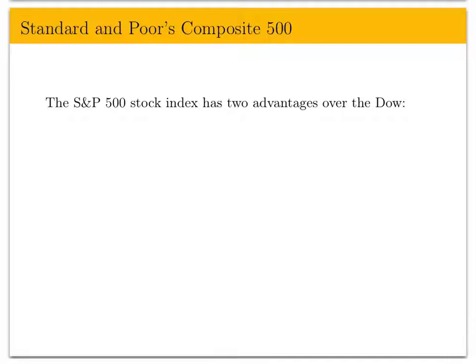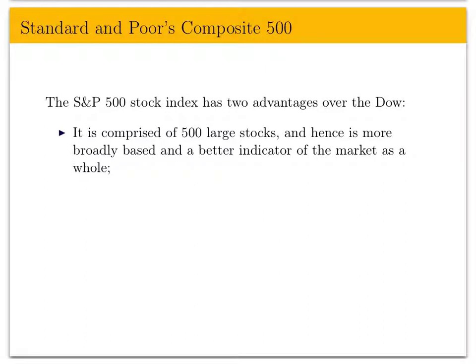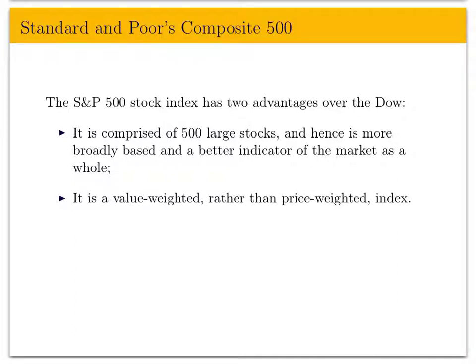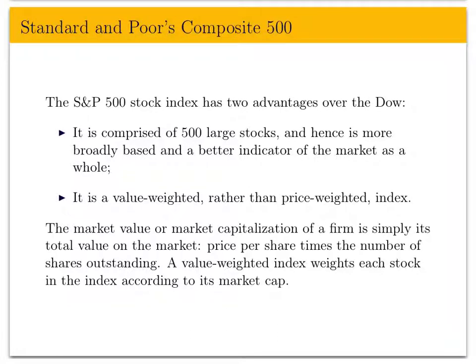Now let's consider a value-weighted index. The S&P 500 — Standard & Poor's Composite 500 — is an example. It has advantages over the Dow: it comprises 500 stocks, making it more broadly based and a better indicator of the overall market. It is also a value-weighted index rather than a price-weighted index, meaning it weights each stock according to its market capitalization. Market capitalization is simply price per share times the number of shares outstanding.